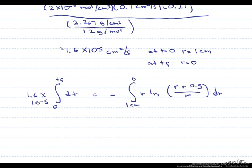And when we do this, what we end up with is 1.6 times 10 to the minus 5 centimeters squared per second times time equals 0.315 centimeters squared.